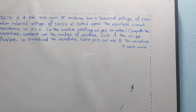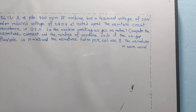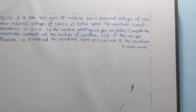The second question: a 4-pole, 900 RPM DC machine has a terminal voltage of 220V and an induced voltage of 240V at rated speed. The armature circuit resistance is 0.2 ohm. Is the machine working as a generator or motor? Compute the armature current and the number of armature coils, given the air gap flux per pole is 10 milliweber and armature turns per coil are 8.